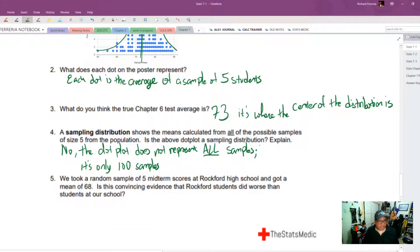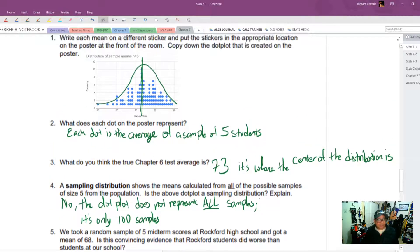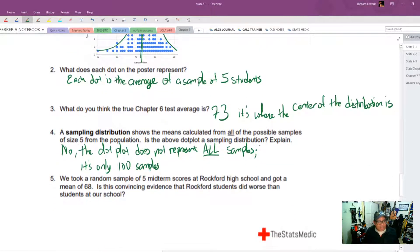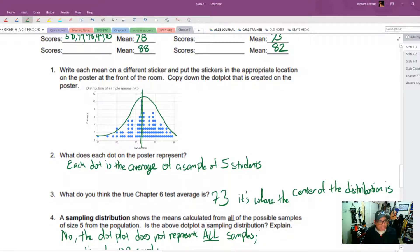Next, we took a random sample of five midterm scores from Rockford high school and got a mean of 68. So is there convincing evidence that Rockford students did worse than our students? Okay, let's take a look at this. Where is 68 on this dot plot? And 68 looks like it's going to be right here.